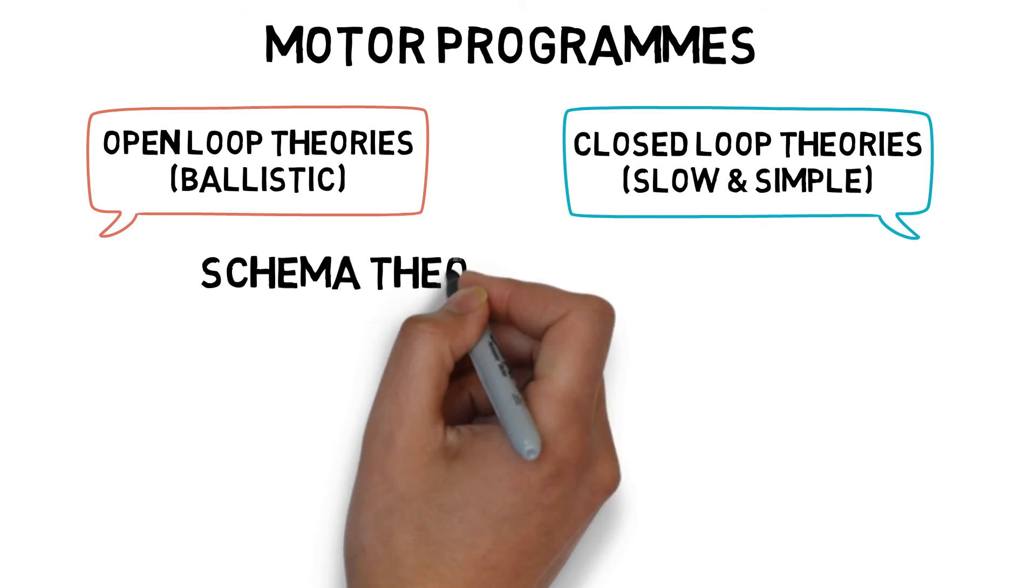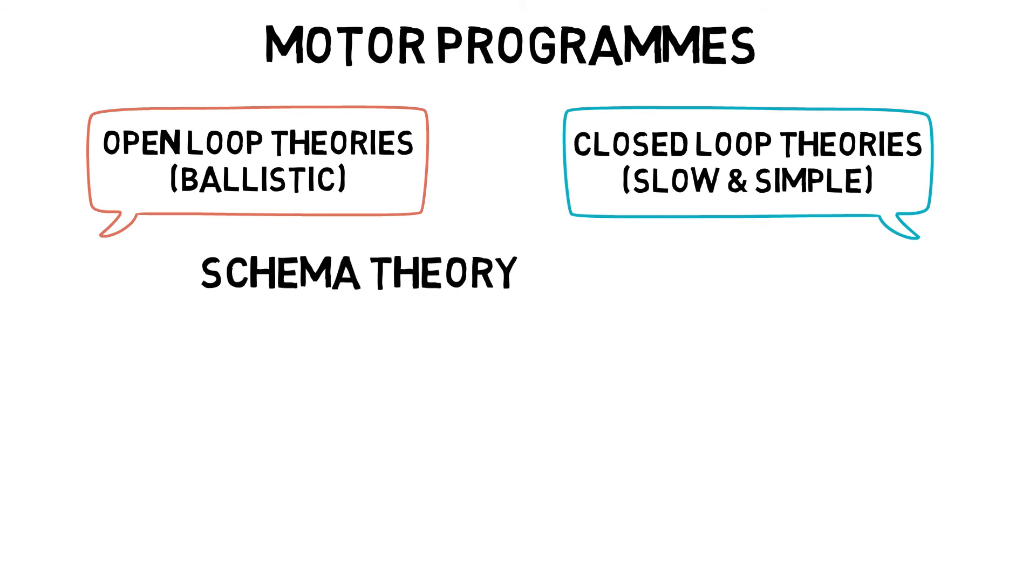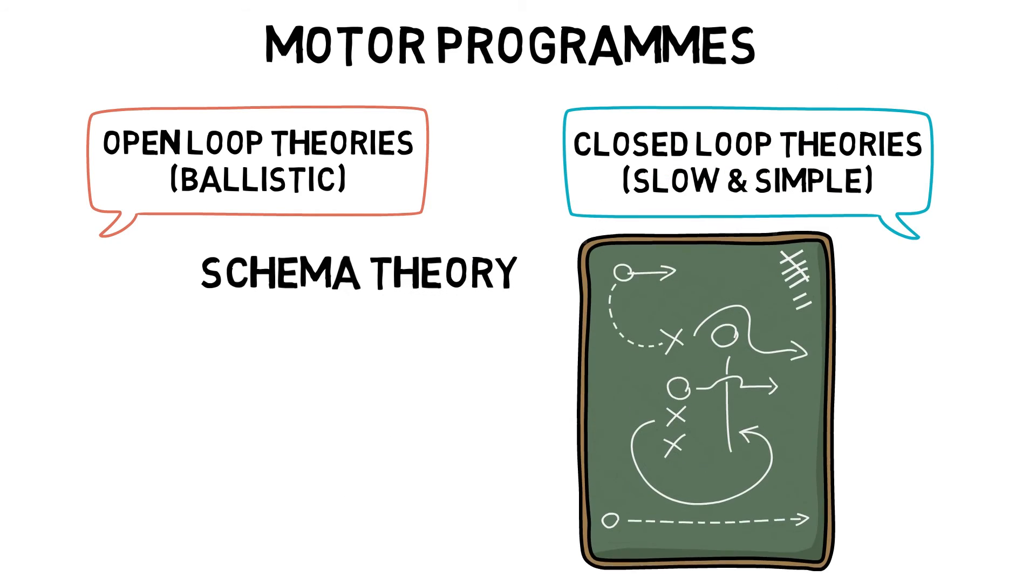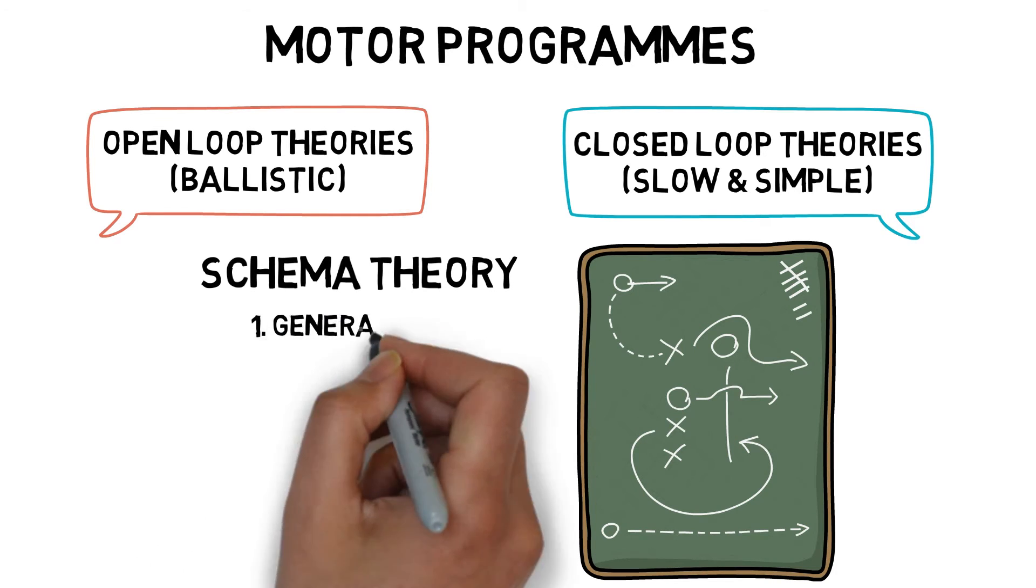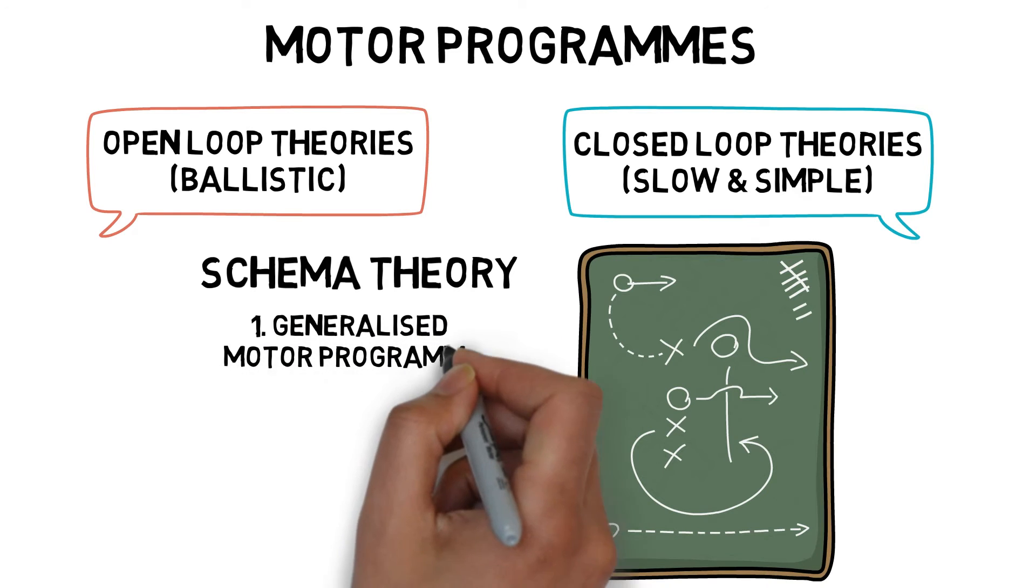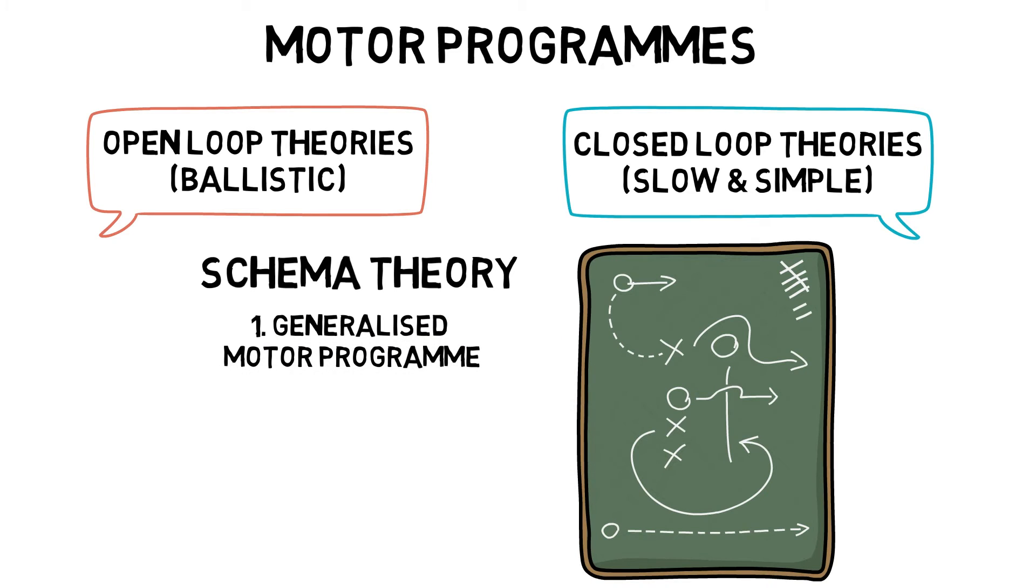Schema theory suggests motor programs are changeable and adapt to each situation. To perform a skill, we need three things. A generalized motor program, which is the ability to perform a basic skill such as catching a ball.